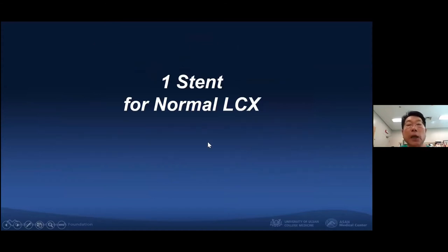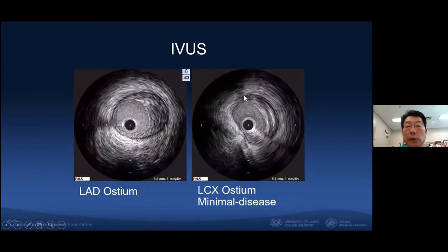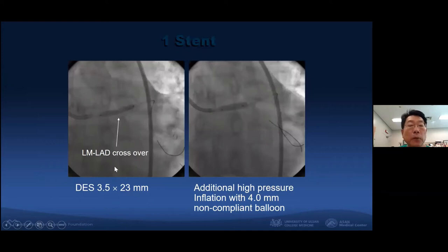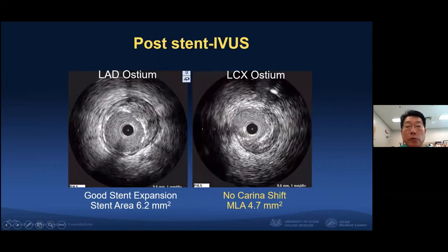I'd like to show the one-stent crossover for a normal circumflex: a 72-year-old male patient with bifurcation and main vessel disease. By IVUS findings, the circumflex ostial part showed very minimal disease — almost a normal-looking area. So we performed a main-to-LAD crossover with a long stent, 23 mm, 3.5 mm size, with additional high pressure using a non-compliant balloon. We achieved clearly good angiographic results — the circumflex ostial part was not compromised after stent crossover, with a minimal lumen area of 4.7 mm².